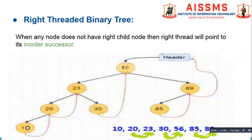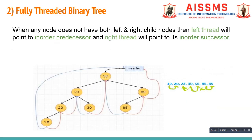Now let us understand what is a fully threaded binary tree. In case of a fully threaded binary tree, we search for nodes with zero child nodes. The left thread of that node points to the inorder predecessor and the right thread points to the inorder successor. In this figure, node 30 does not have any child node, so its left thread is pointing to the inorder predecessor, which is 23, and its right thread is pointing to the inorder successor, which is 56. Thank you for watching.